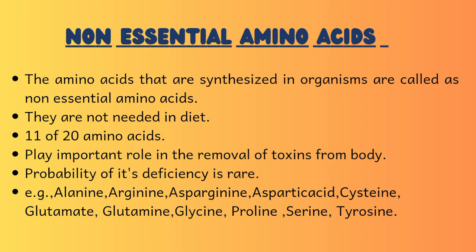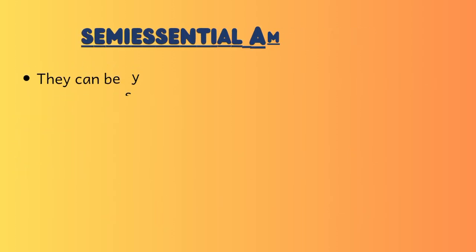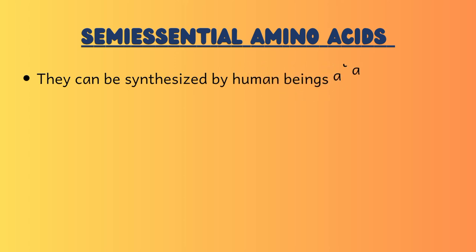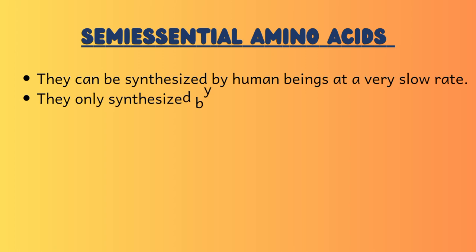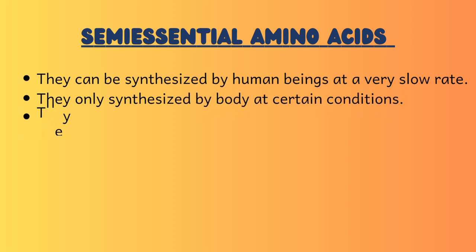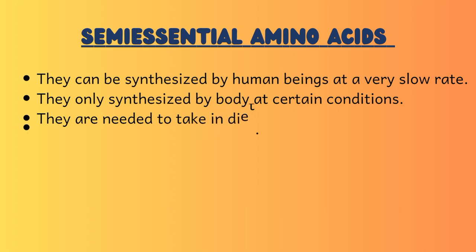There is one more category of amino acids which are semi-essential amino acids. These are amino acids which are synthesized at a very slow rate in organisms. They are only synthesized by the body at certain conditions, like when there is a deficiency or a need for cell metabolism. The examples of semi-essential amino acids are arginine and histidine, and there are more semi-essential amino acids.